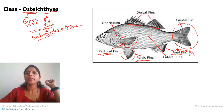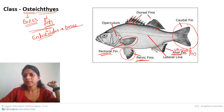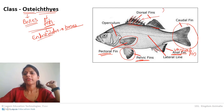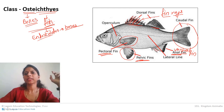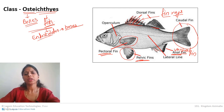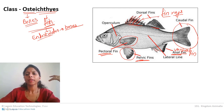In the fins you can see spiny structures called fin rays. Fin rays are supporting structures that support the fins. This kind of fin ray is not observed in Chondrichthyes — it is a special characteristic of Osteichthyes. Fin rays support the fins properly and are made up of either cartilage or bone, depending on the type of fish.